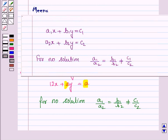If we are given two linear equations, A1X plus B1Y equals C1 and A2X plus B2Y equals C2, then for no solution, A1 upon A2 is equal to B1 upon B2 but it is not equal to C1 upon C2.